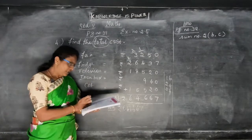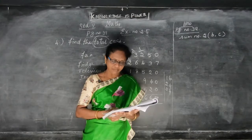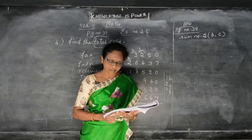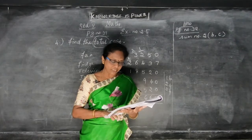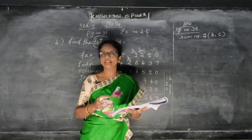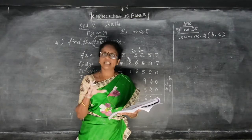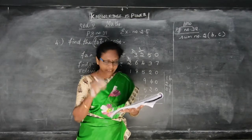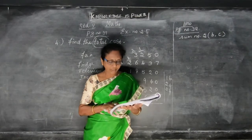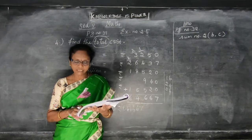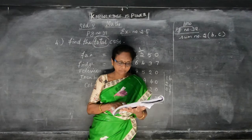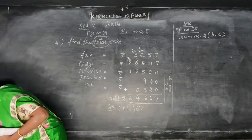Now the fifth sum: a day's sale of different vegetables in a vegetable shop. Brinjal is rupees 4,500; tomato 7,800; onion 26,500; potato 7,825; and beetroot is rupees 825. Find the total amount of sales.